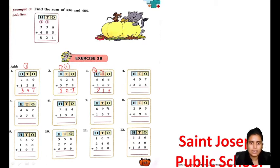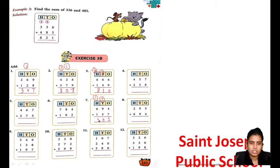Now I am taking the second question here. 7 plus 4 is 11, 1 carry again. 9 plus 3 is 12, 12 plus 1 is 13, 1 carry. 6 plus 1 is 7, 7 plus 1 is 8. So the answer is 831.